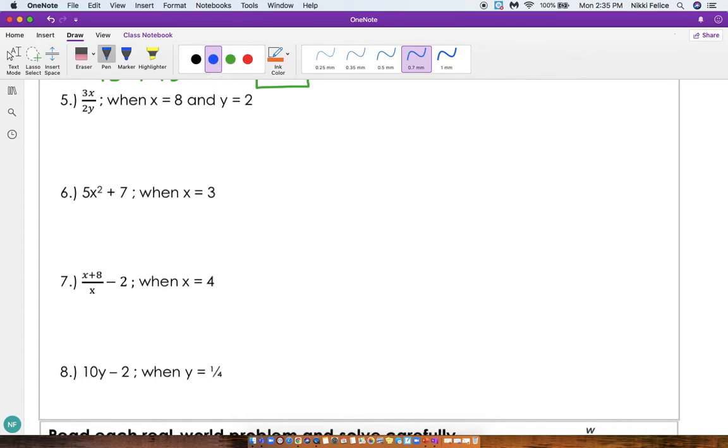Let's go over them together. 3 times x divided by 2 times y when x equals 8 and y equals 2. So we're going to do 3 times 8 divided by 2 times 2. This equals 3 times 8 is 24, I'm going to multiply first, divided by 2 times 2 is 4. So 24 divided by 4, and that equals 6.